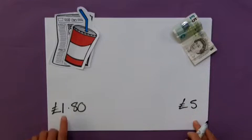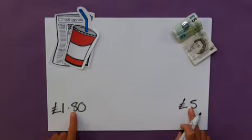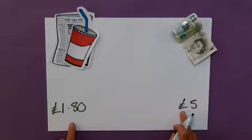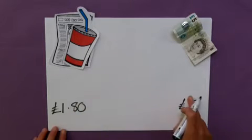Now, our change would be £1.80 subtracted from £5, and all subtraction is, is the gap between the two numbers, the difference between the two numbers. So, I'm going to use the counting-on method to bridge that gap.